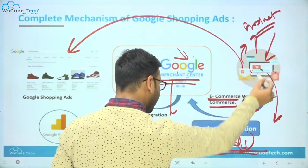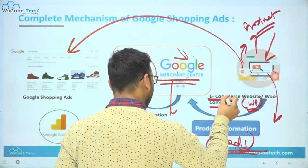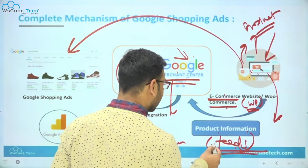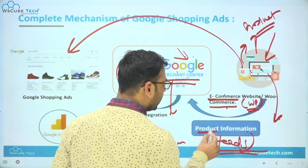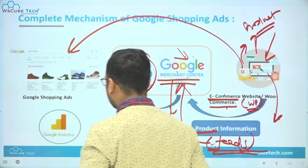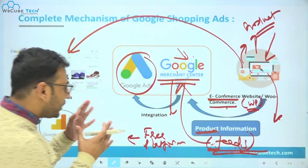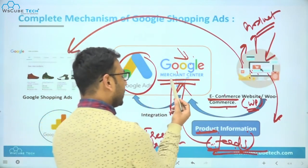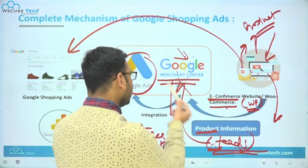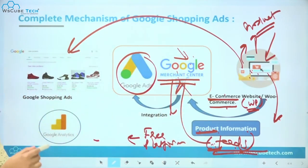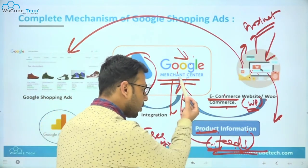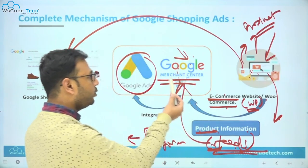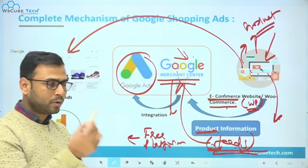You can use a plugin if you have a WooCommerce website, or take the help of your e-commerce developer, to download the feed. You then create an account on Google Merchant Center, which is a free platform offered by Google. Upload this product feed into your Google Merchant Center account. This tool also acts as an audit tool — if there is any problem with your products, it will notify you so you can make changes accordingly.